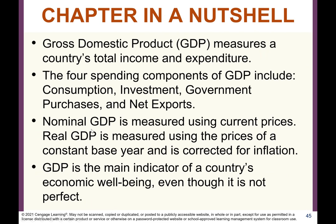In summary — chapter in a nutshell. Gross Domestic Product or GDP measures a country's total income and expenditure. The four spending components of GDP include consumption, investment, government purchases, and net exports. Nominal GDP is measured using current prices. Real GDP is measured using the prices of a constant base year and is corrected for inflation. GDP is the main indicator of a country's economic well-being, even though it is not perfect.